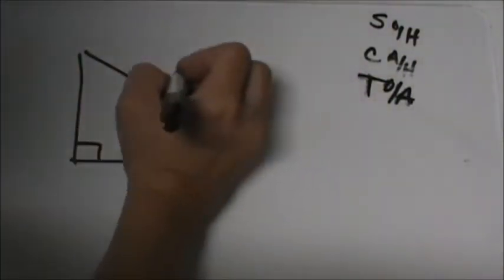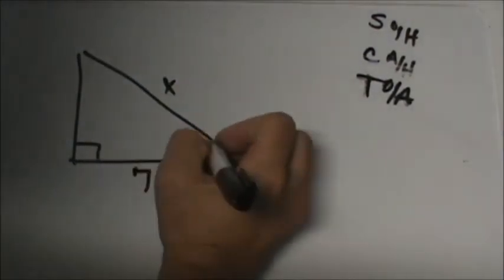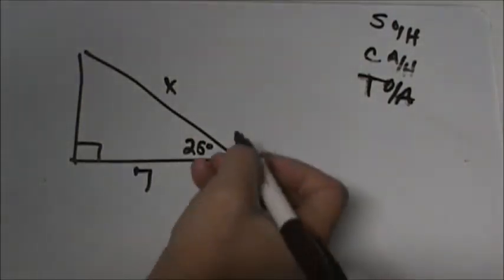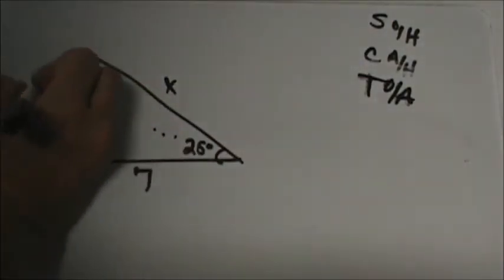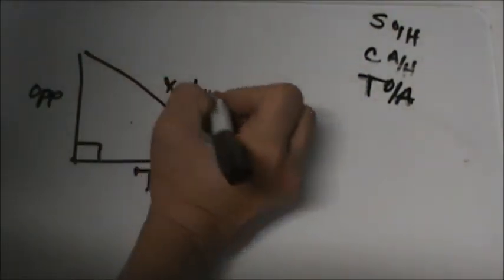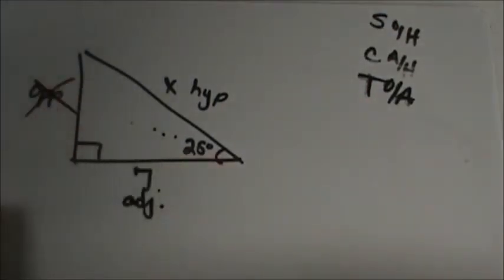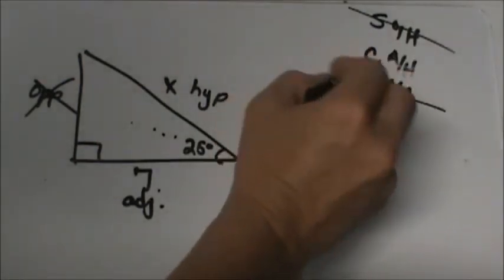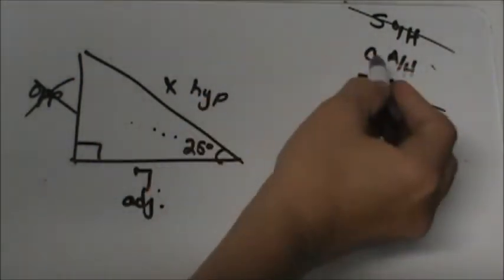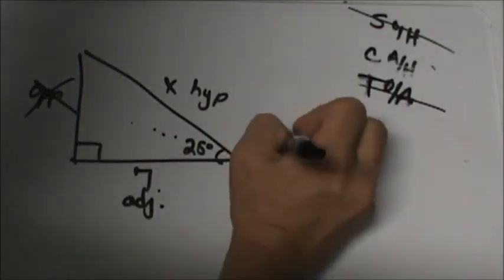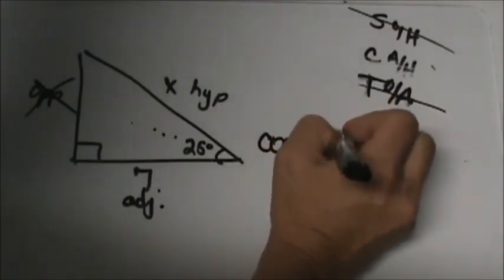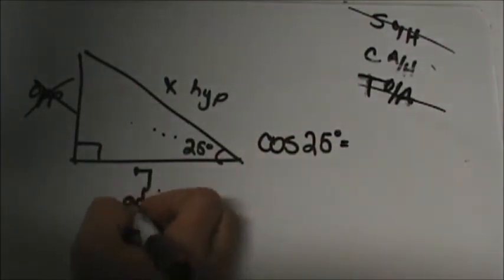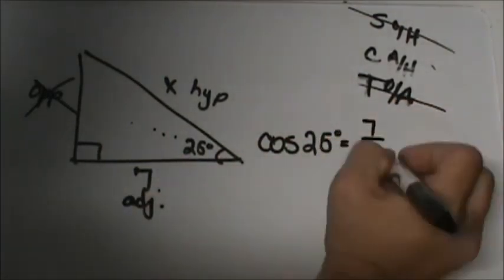Let's look at the third one. We have x here, we have a 7 here, and we have a 25 degree reference angle. From the reference angle: this one's opposite, this one is hypotenuse, and this one is adjacent. Which side are we not using? We're not using the opposite, so we know it's not the sine, and it's not the tangent either. The only one left is cosine, which is adjacent over hypotenuse. So the cosine of 25 is equal to 7 on top and the hypotenuse — which is x — on the bottom.